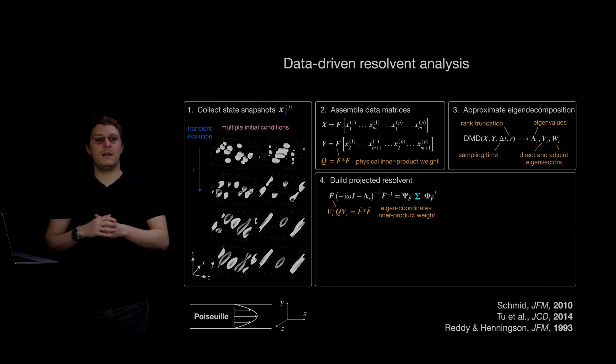But in their case, they used the actual eigendecomposition of the system from a known operator, whereas here we're using learned eigenvectors and eigenvalues that we learned from data using DMD.